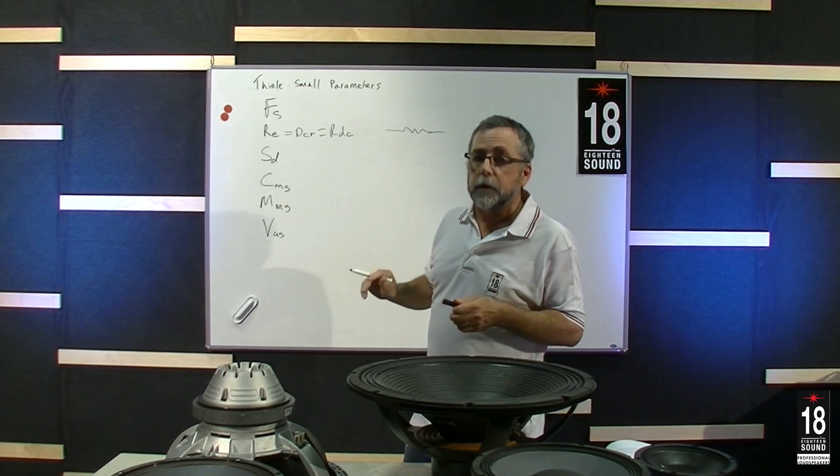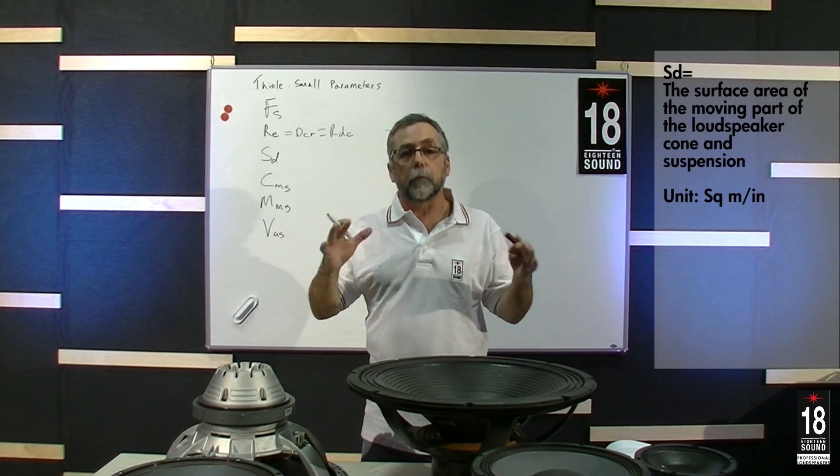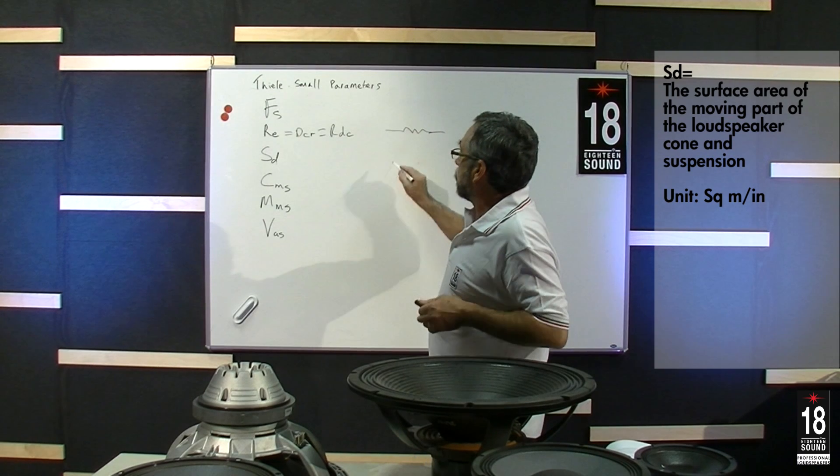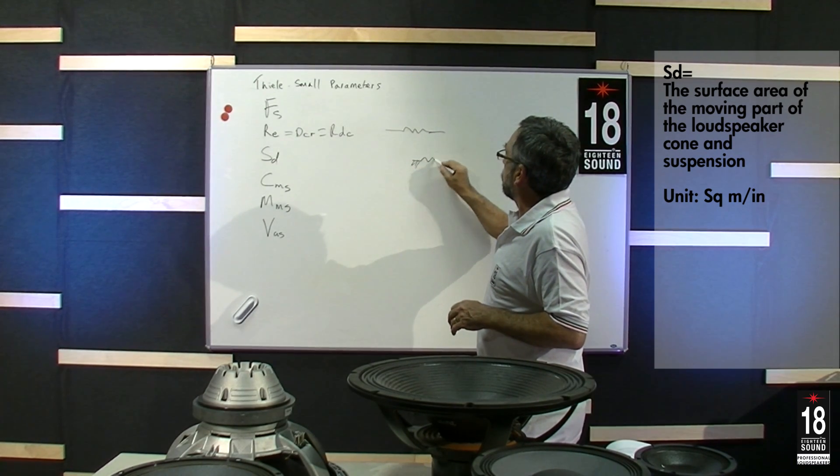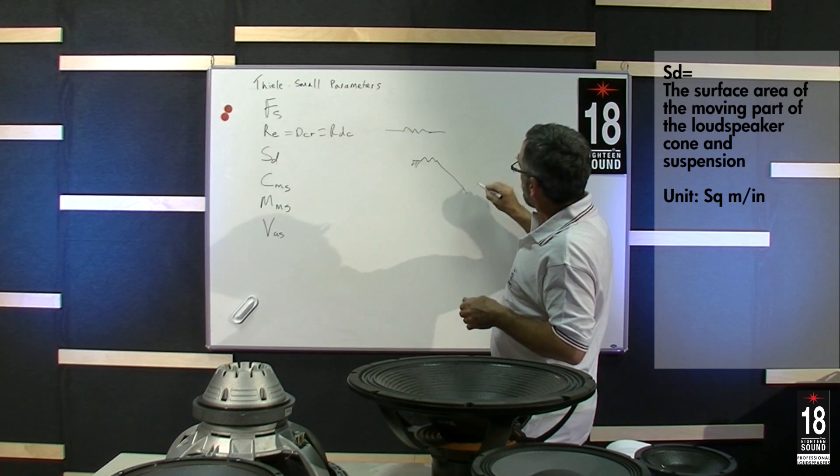Next is SD. SD is the surface area of the moving part of the loudspeaker. So we know that the speaker has a frame and the surround is glued to it. The surround is attached to a cone.